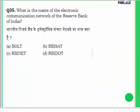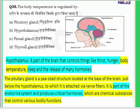Question 35: What is the name of the electronic communication network of the RBI? The answer is RBI Net. Question 36: The body temperature is regulated by which gland — pituitary gland, hypothalamus, pineal gland, or thyroid gland?